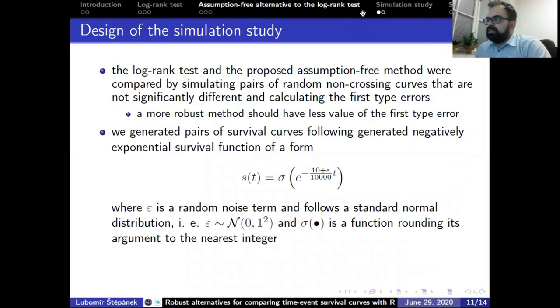The log-rank test and the proposed assumption-free method are compared by simulating pairs of random non-crossing curves that are not significantly different. Calculating the first type errors means when equivalent curves are detected as different. We assume that a more robust method should have less value of the first type error, so we generated many pairs of survival curves following a negative exponential survival function as defined below.